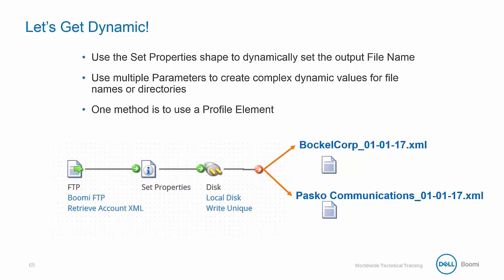So let's examine where this name came from. Somewhere in the data, there's a reference to the company name element. We can reference this element by using a profile. The XML profile we are using was generated earlier, and we simply use the set property shape to pull in the profile element.